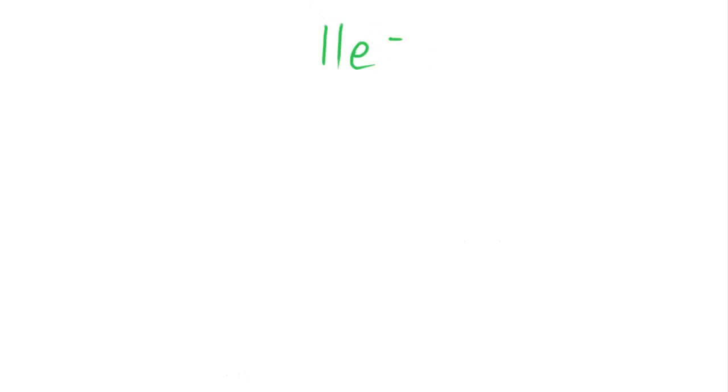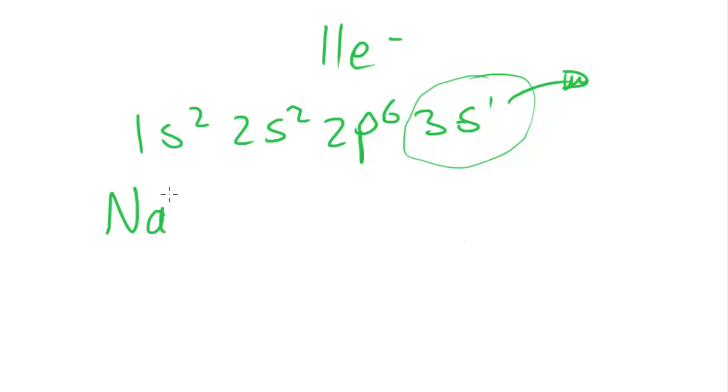So if we imagine the electron configuration of sodium with 11 electrons, that would be 1s² 2s² 2p⁶, and then we'd have the 3s¹. This 3s orbital, the electron located inside it, is lost and it becomes an ion. So Na becomes Na⁺ because now there's 11 protons and there's only 10 electrons. And this electron configuration changes from being 1s² 2s² 2p⁶ 3s¹ to being, for Na⁺, 1s² 2s² 2p⁶ and no more 3s¹.